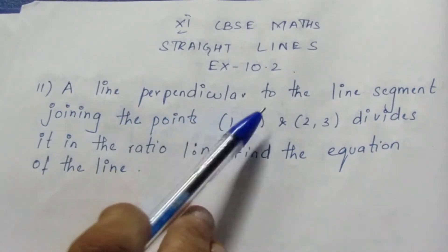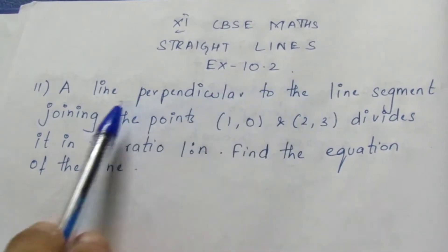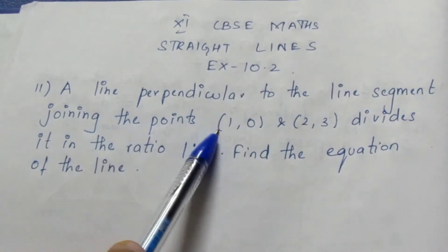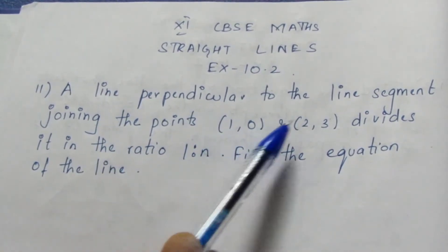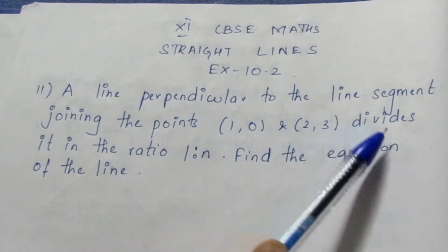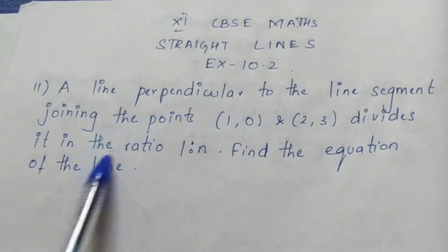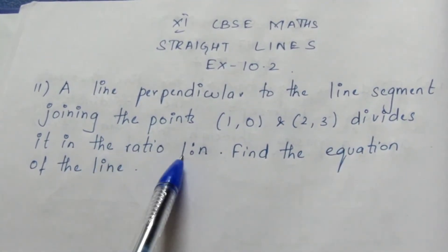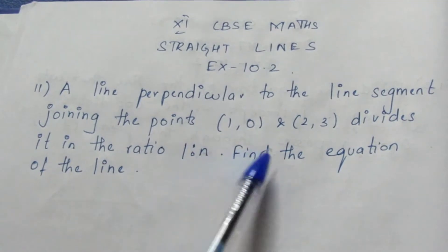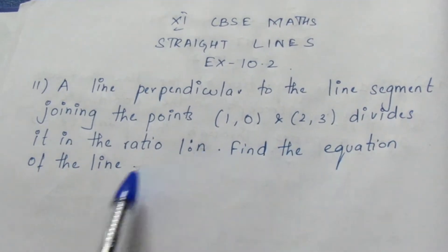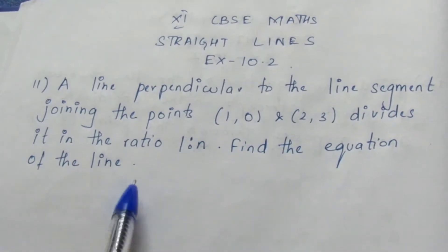A line perpendicular to the line segment joining the points (1, 0) and (2, 3) divides it in the ratio 1 is to 9. Find the equation of the line.